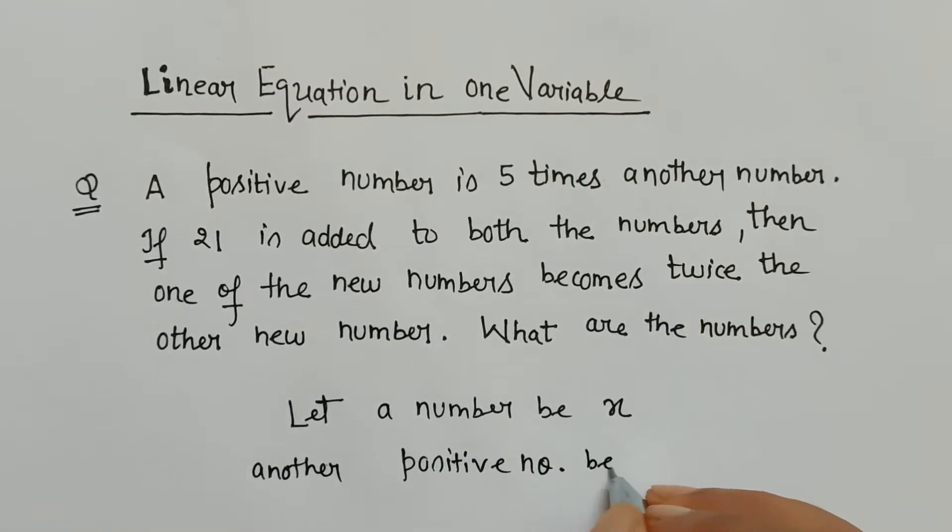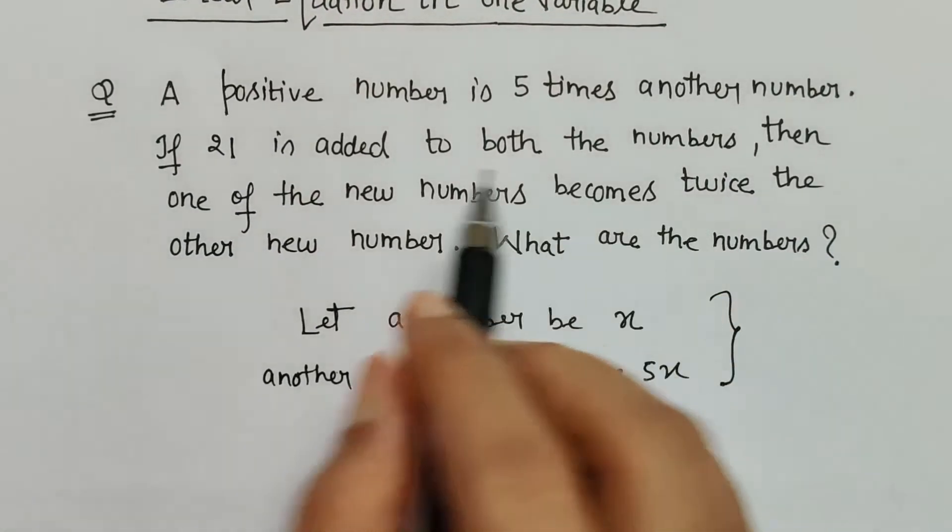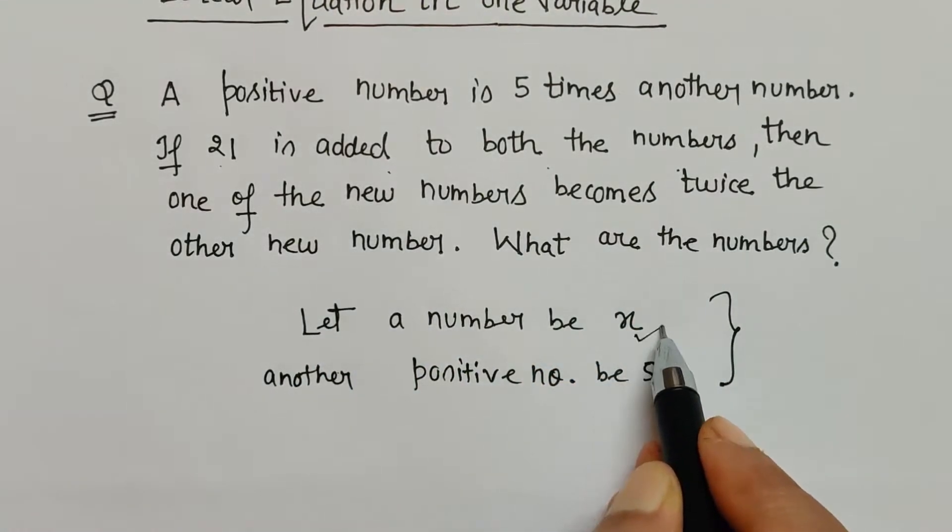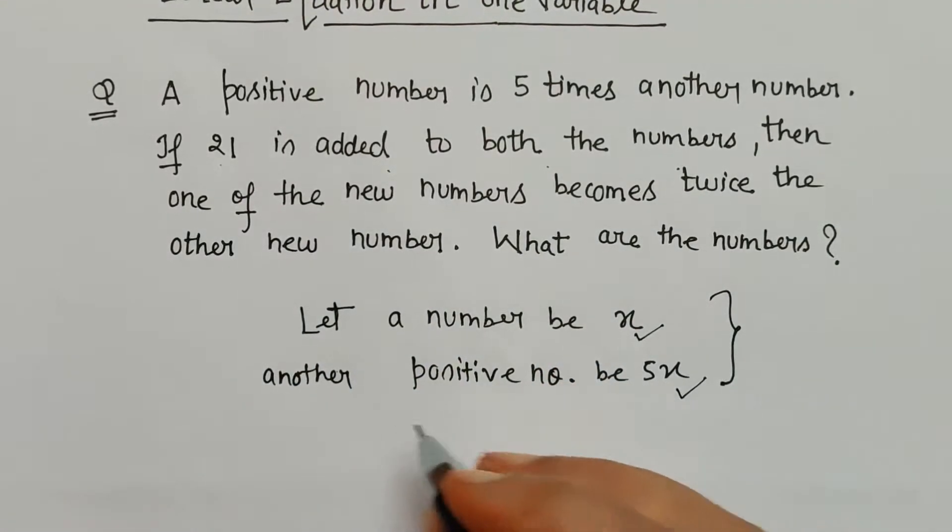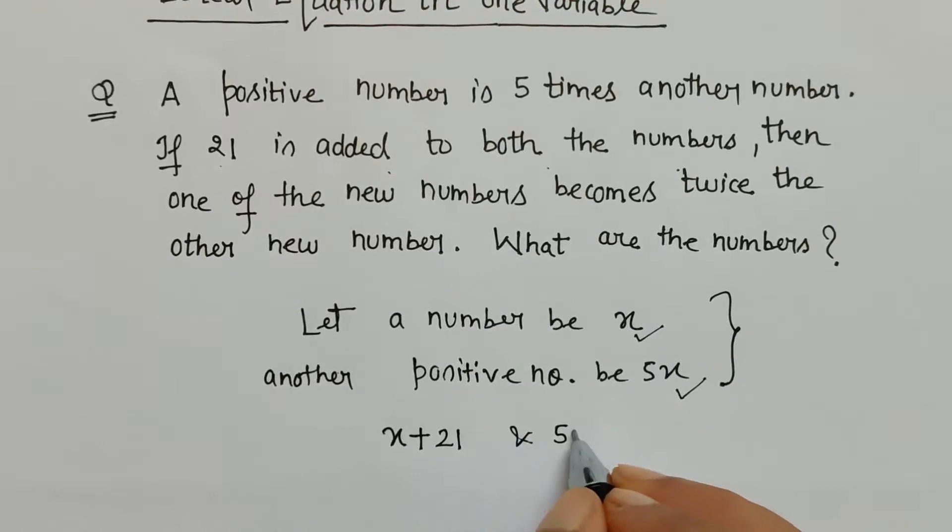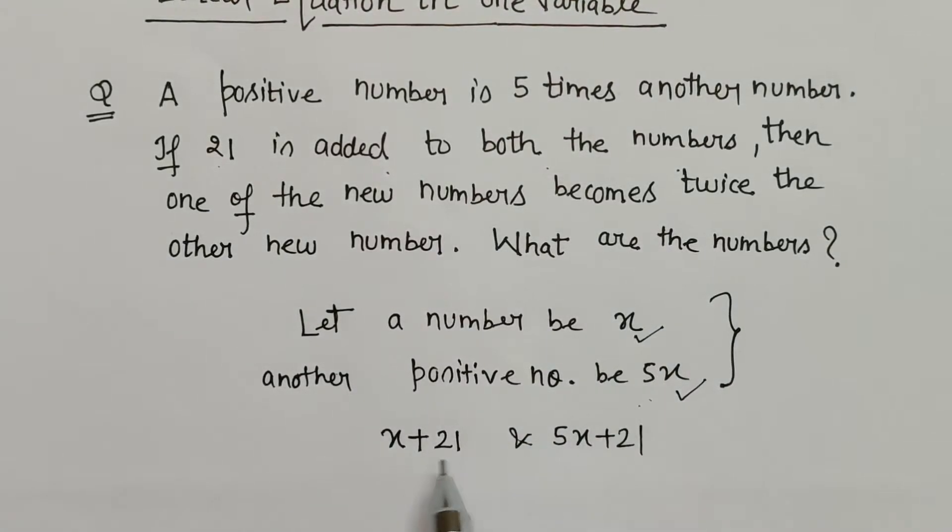Now what is the next line? Next line states that if 21 is added to both the numbers, that means if 21 is added to this and this. So let's add 21 to both: x + 21 and 5x + 21. When 21 is added to both the numbers that we have done here.